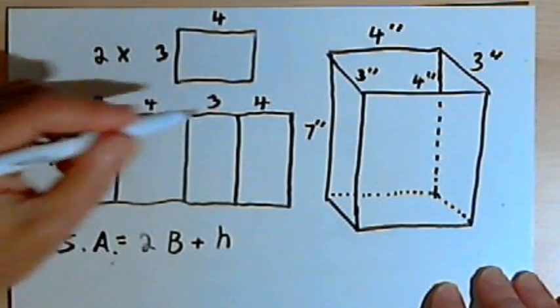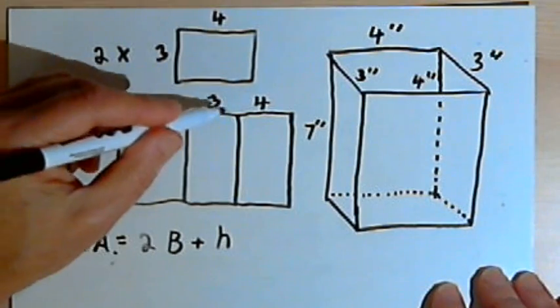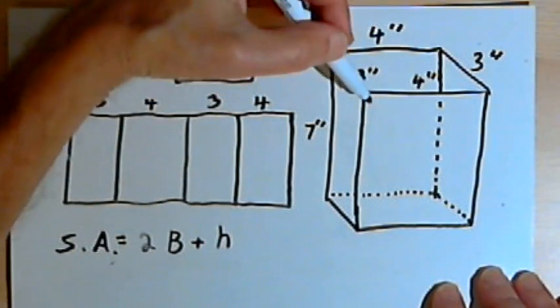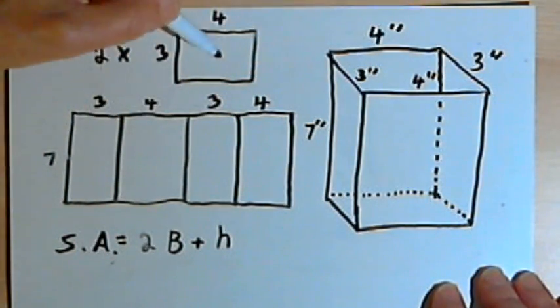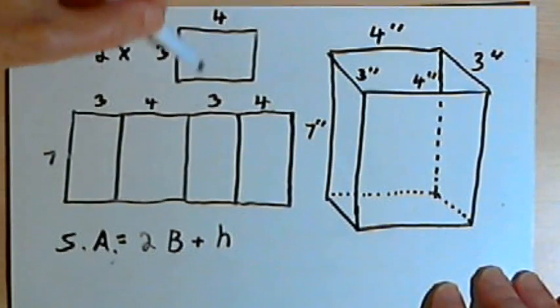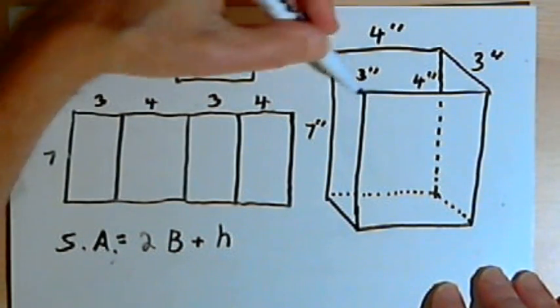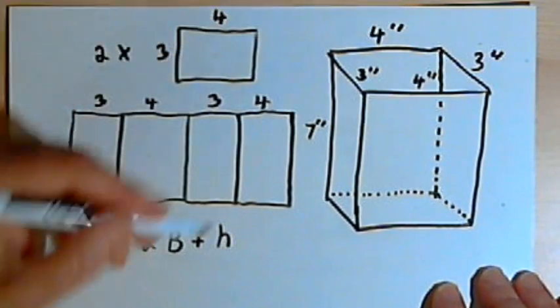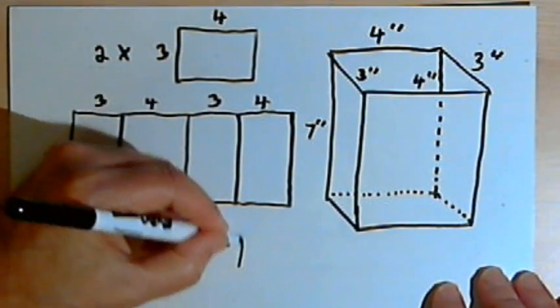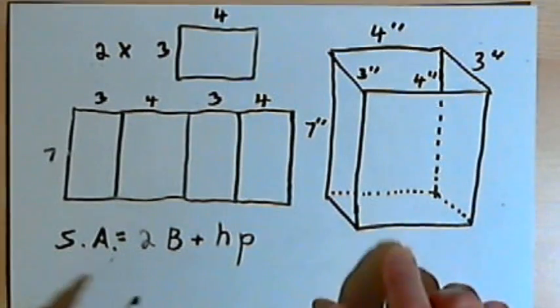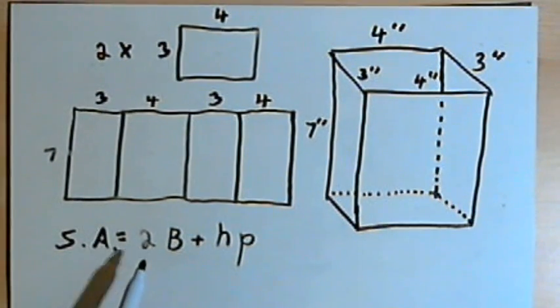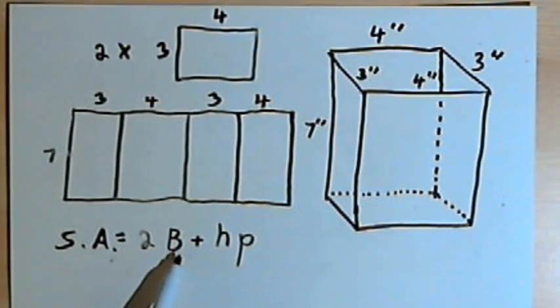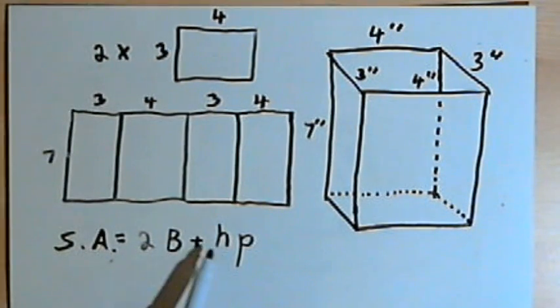3 plus 4 plus 3 plus 4. That 3 plus 4 plus 3 plus 4 is really the perimeter of the rectangle, the perimeter of the base. So we can say that the formula for the surface area of a prism is going to be 2 times the surface area of the base plus the height times the perimeter of the base.